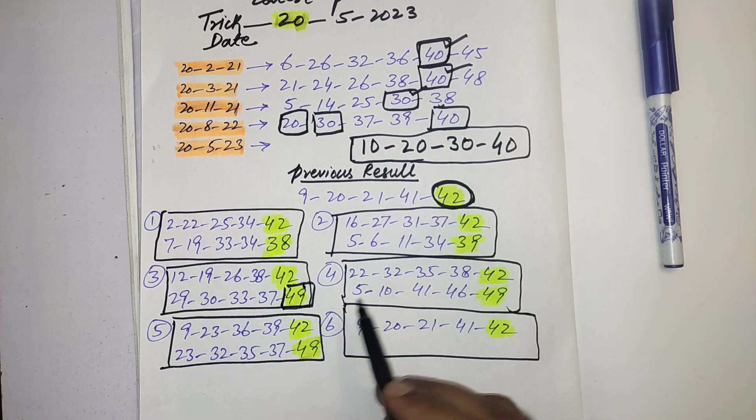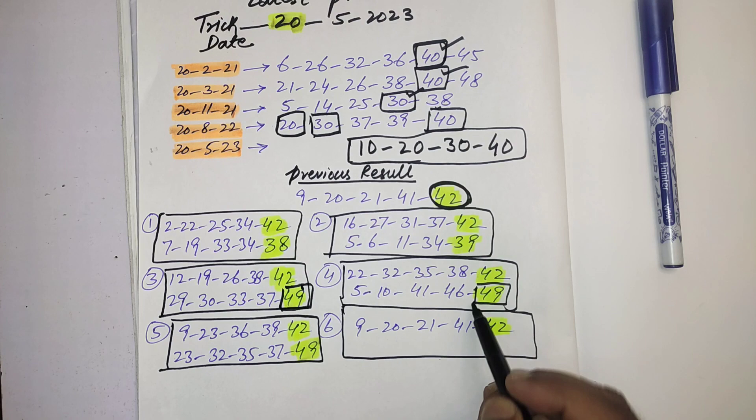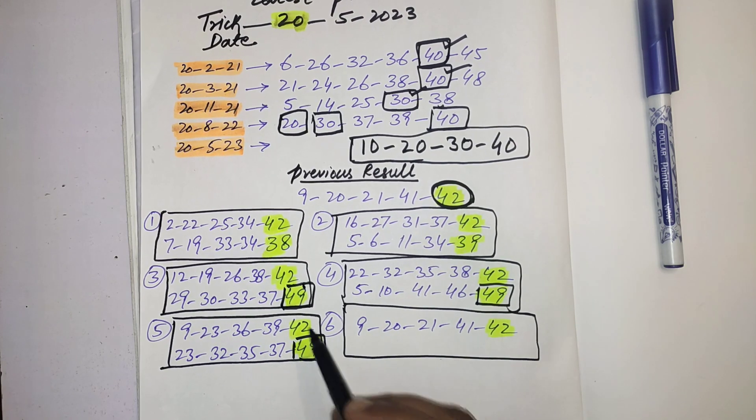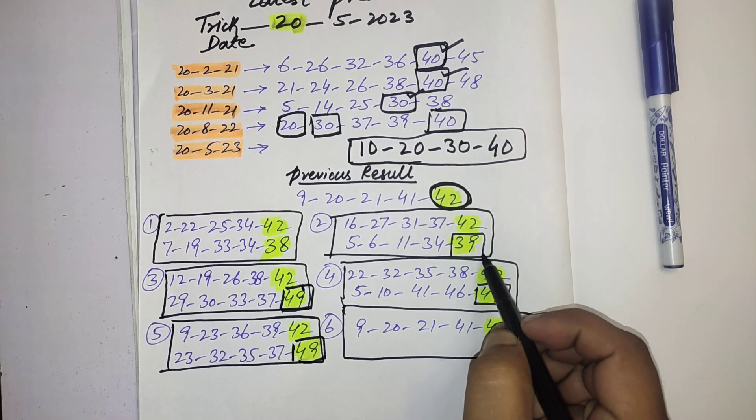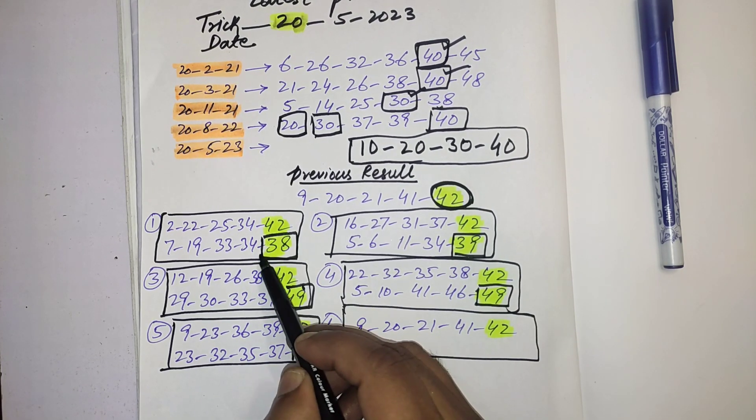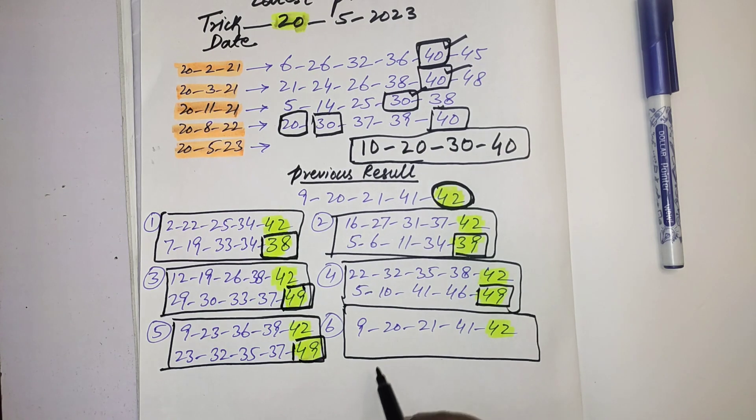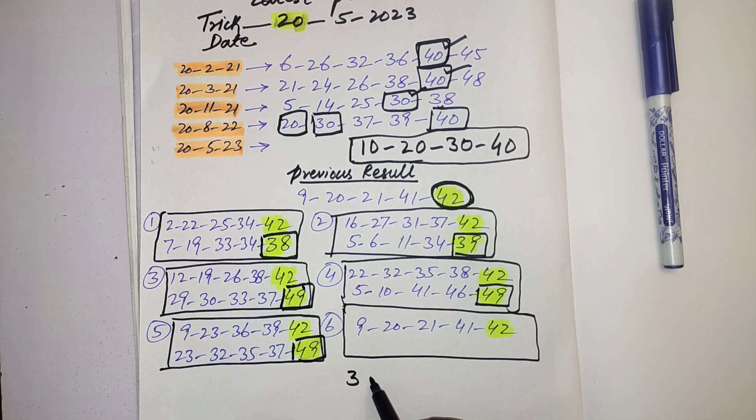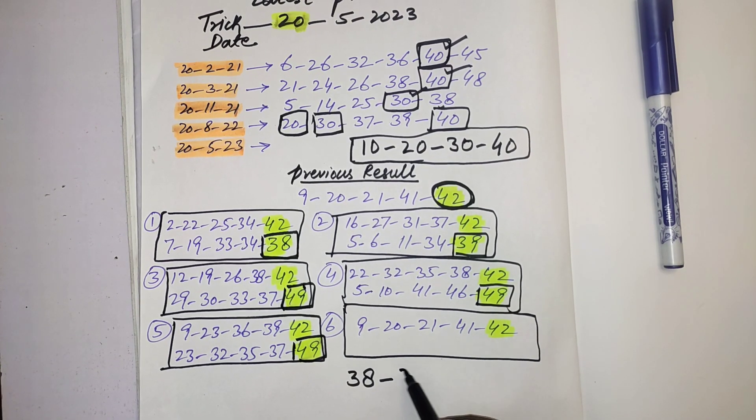After 42 you can see 49, 49. Before that one number they picked 39, and first you can see they picked 38. So these numbers 38, 39...